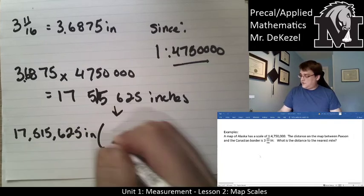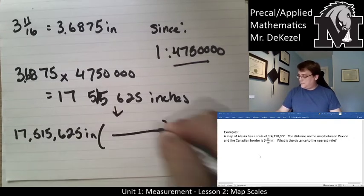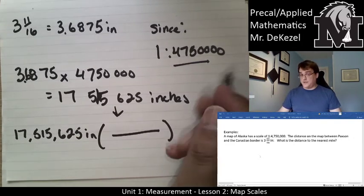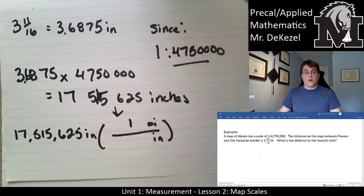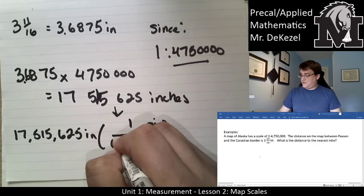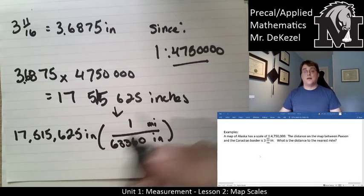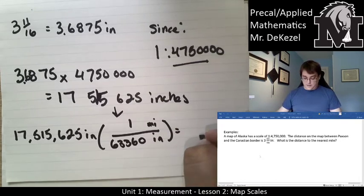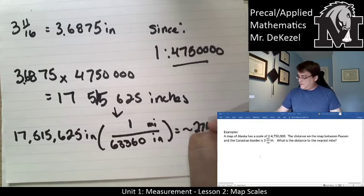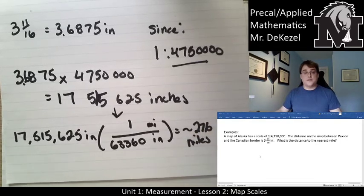I'll make my brackets and I want miles, so miles goes on top, inches goes on the bottom. In one mile I know that there are 63,360 inches. That's from above or from a previous lesson. So you divide those numbers to get, it ends up being approximately 276 miles. That's more helpful than 17 million inches.